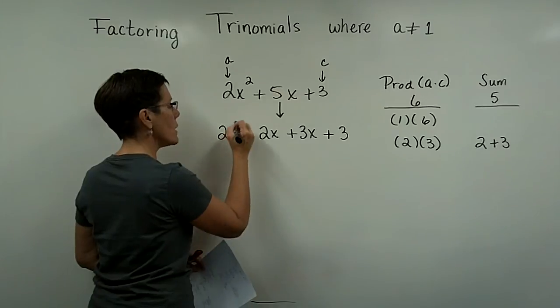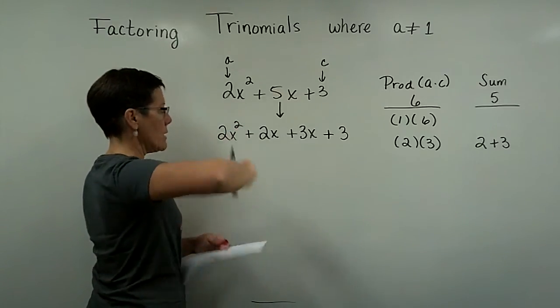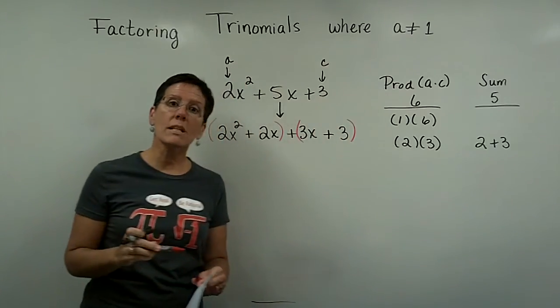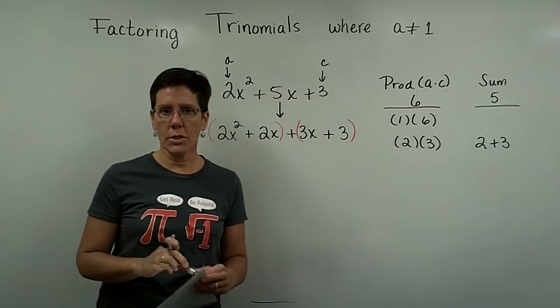Now we're going to bring down this 3 and then this was a positive 2x. We're going to bring down the 2x squared and now we're going to go ahead and group the first two terms and group the last two terms because we have a polynomial in four terms.